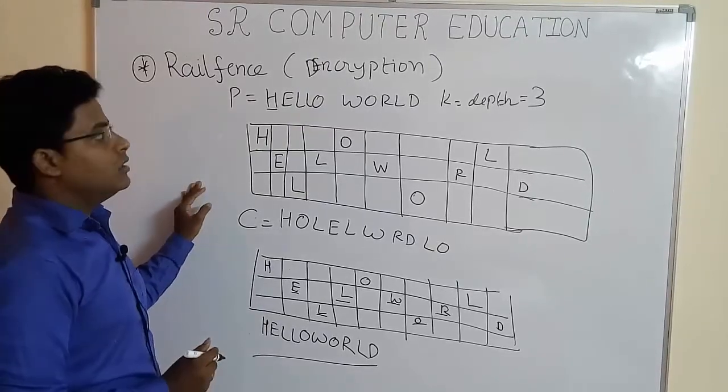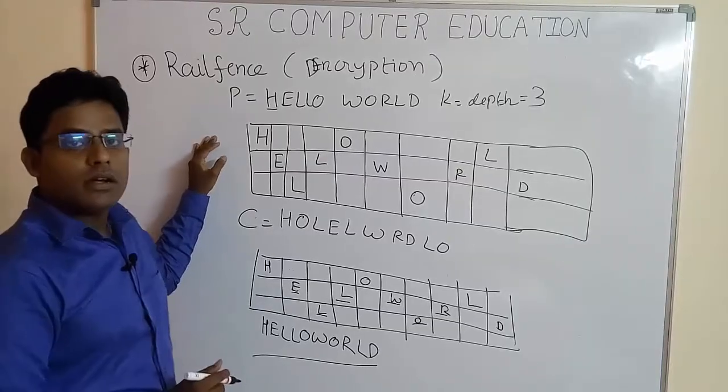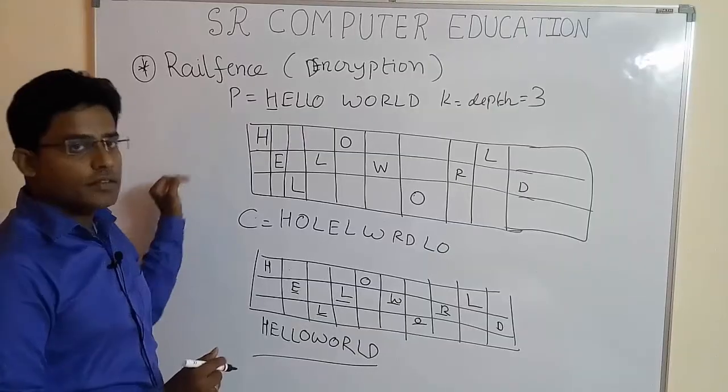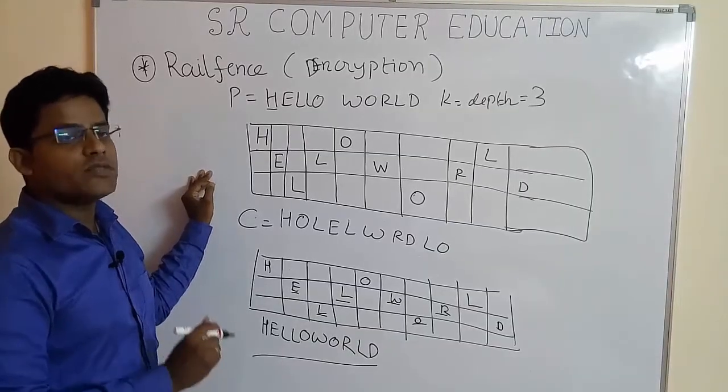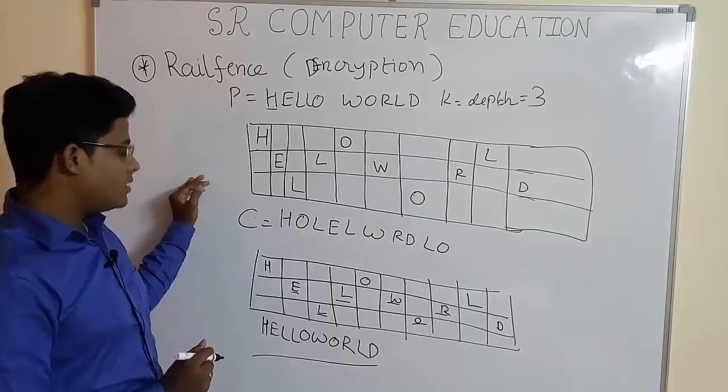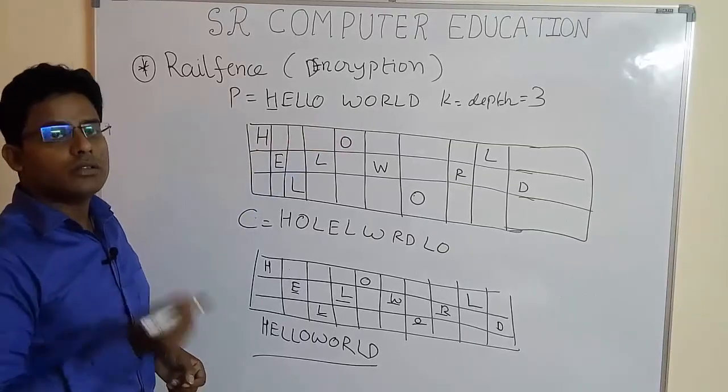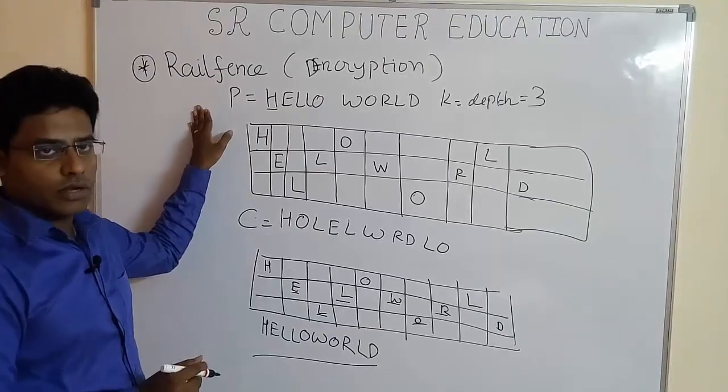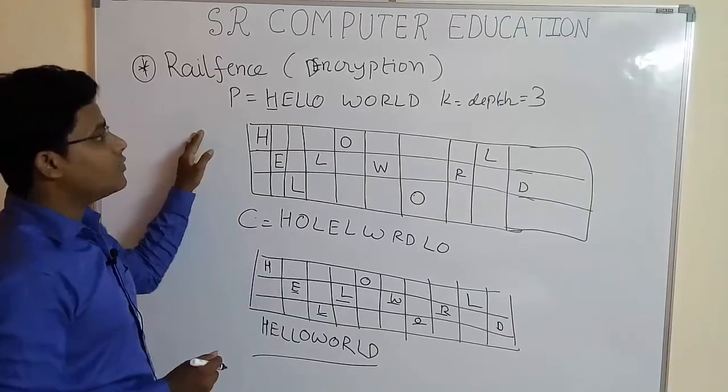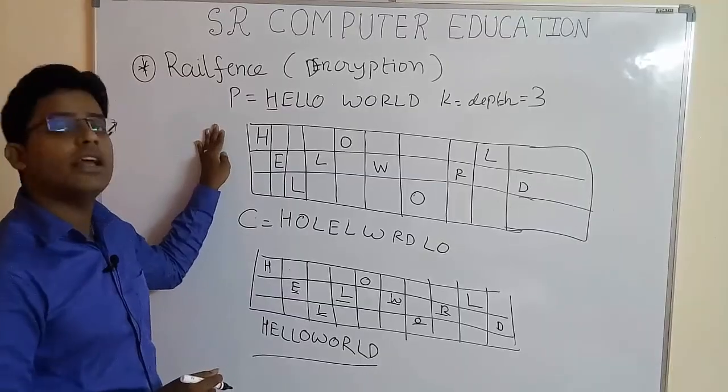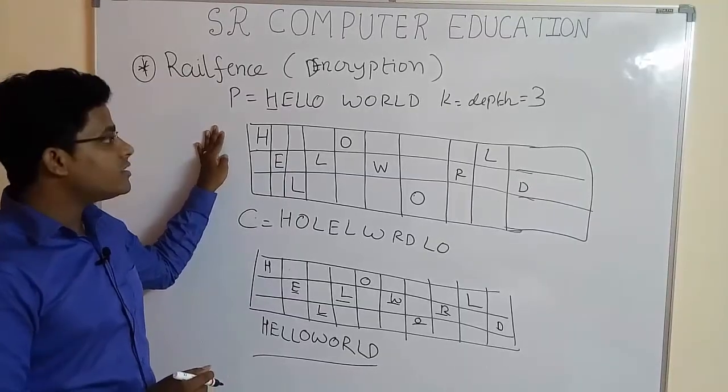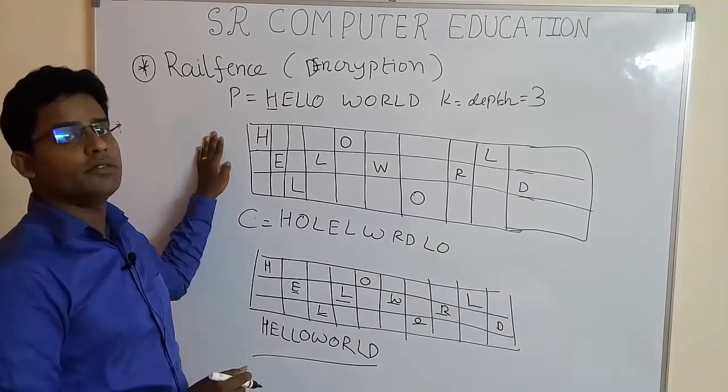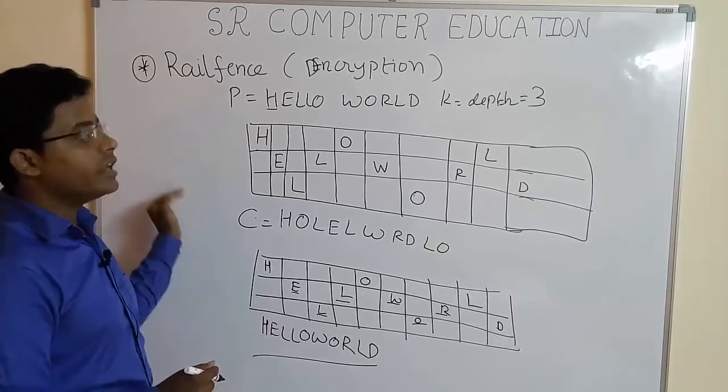I hope this video had cleared all your doubts of solving the examples of rail fence, encryption as well as decryption part, when the given depth is 2 or 3. In examination you will get the depth 2 or 3 only. Thank you very much students for watching my video. If you think this video has been helpful for you, share this video with your friends so they can also know how to do encryption and decryption easily using rail fence technique.